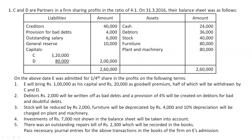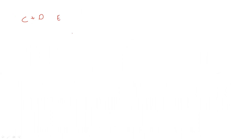The problem we are going to solve today involves partners C and D as the existing partners, and E will be the new partner who will be admitted into the firm. When the new partner is admitted, the new partner has to bring in amount in two forms: one is in the form of capital and another one in the form of goodwill, or premium for goodwill.